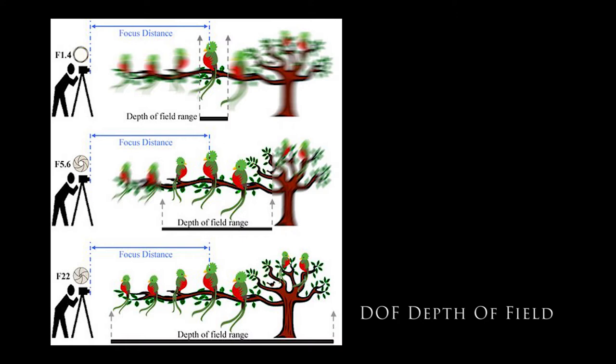It's not a fixed distance — it changes in size and it can be described as either shallow, where only a narrow zone appears sharp, or deep, where more of the picture appears sharp.